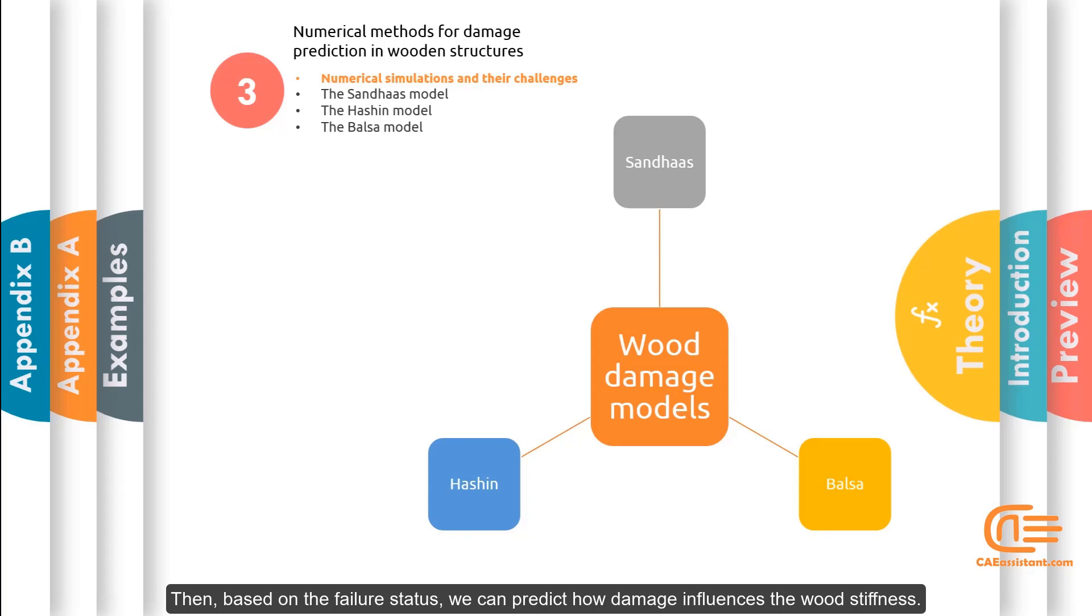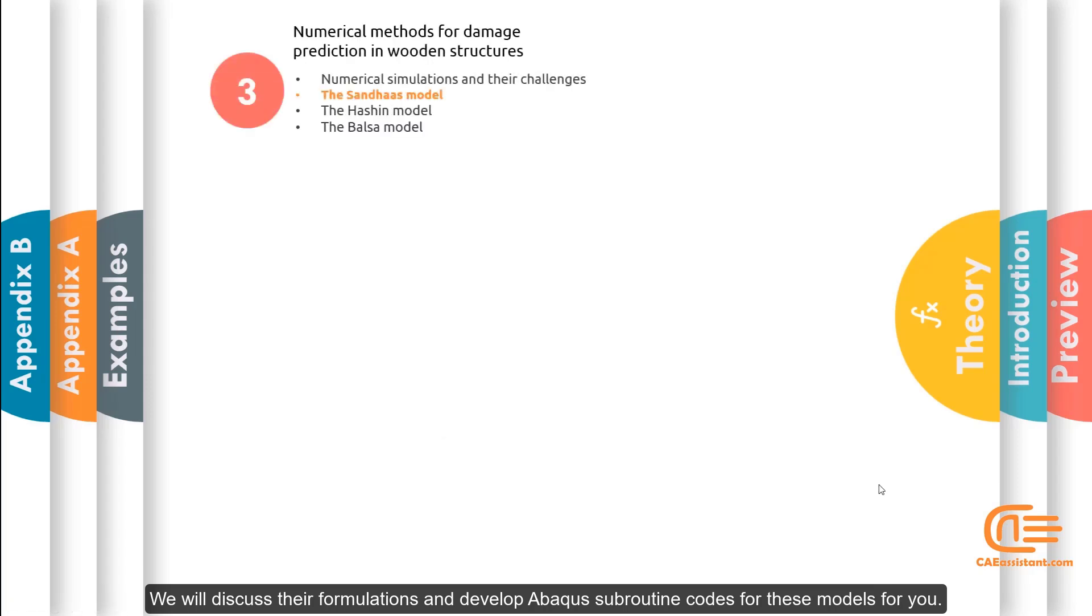Then, based on the failure status, we can predict how damage influences the wood's stiffness. We will discuss their formulations and develop Abaqus subroutine codes for these models for you.